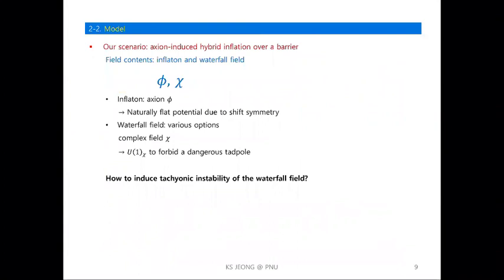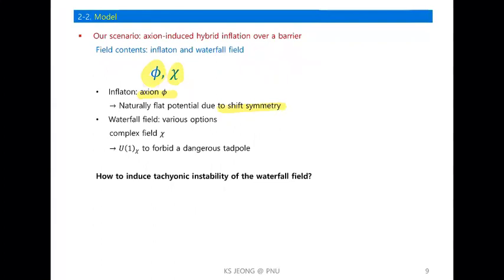In our model, we consider the axion as the inflaton field and utilize a potential barrier. So again, in our scenario we have two fields: one is the slow-rolling inflaton and the other is the waterfall field. We use the axion field as the inflaton because it naturally has a very flat potential owing to the shift symmetry. As for the waterfall field, there are various options, and here we consider the case where χ is a complex field.